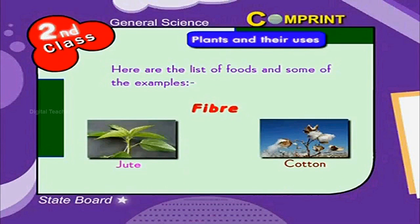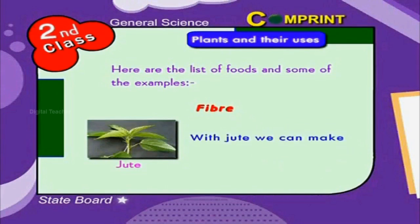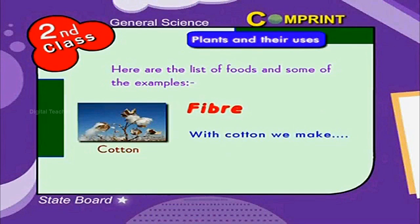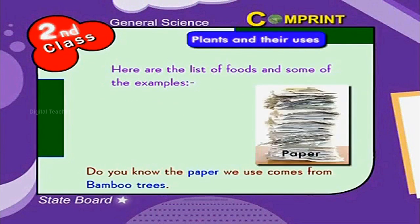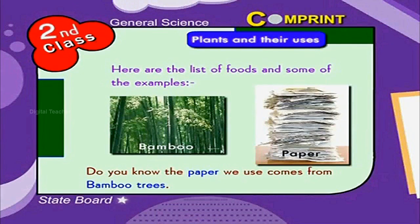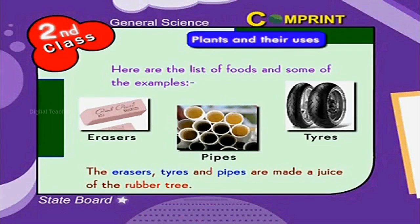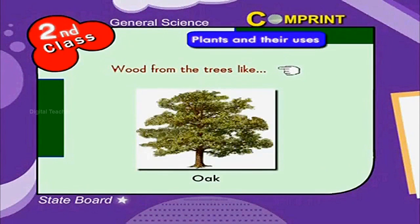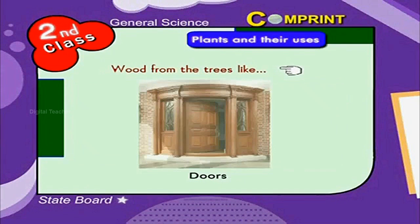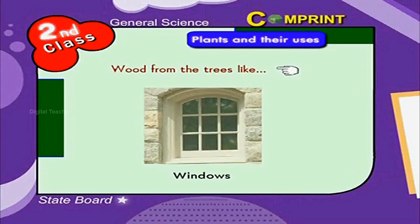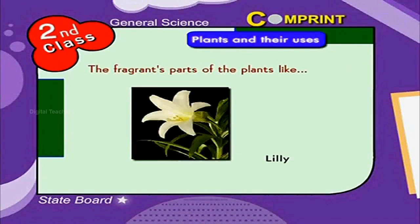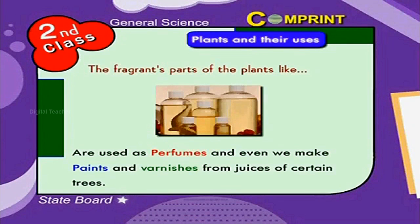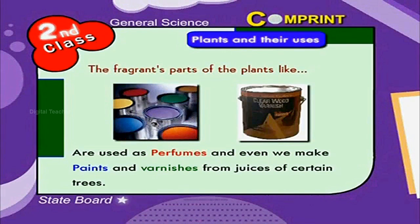Plants give us fiber like jute and cotton. With jute we can make mats, bags and ropes. With cotton we make clothes. The paper we use comes from bamboo trees. Erasers, tires and pipes are made from the juice of the rubber tree. Wood from trees like teak, oak and others is used as furniture, doors or windows. The fragrant parts of plants like lily, rose, jasmine and clove are used as perfumes, and we also make paints and varnishes from the juices of certain trees.